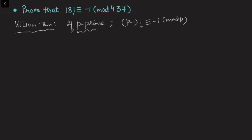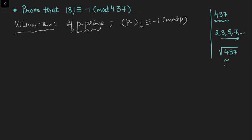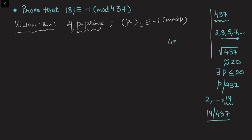This theorem applies to prime numbers, but 437 is not prime. To find which integer divides 437, we note it is odd, and checking primes 2, 3, 5, 7 shows none divide it. Since the square root of 437 is approximately 20, there must be a prime less than or equal to 20 dividing it. Checking up to 19, we find 19 divides 437, giving us 437 = 19 × 23.